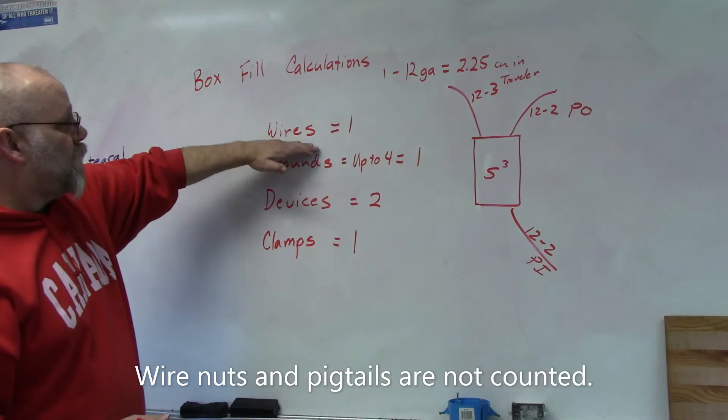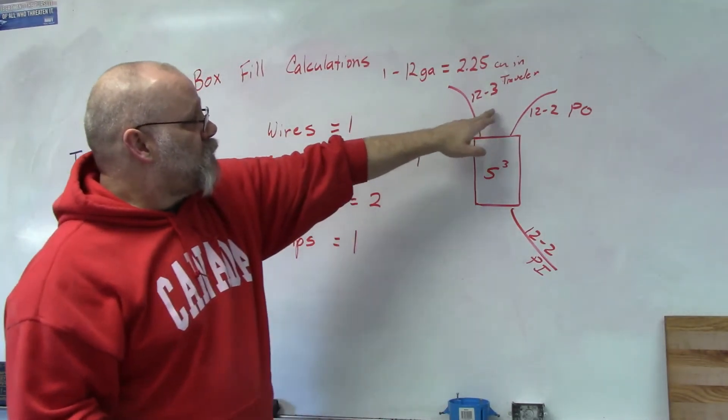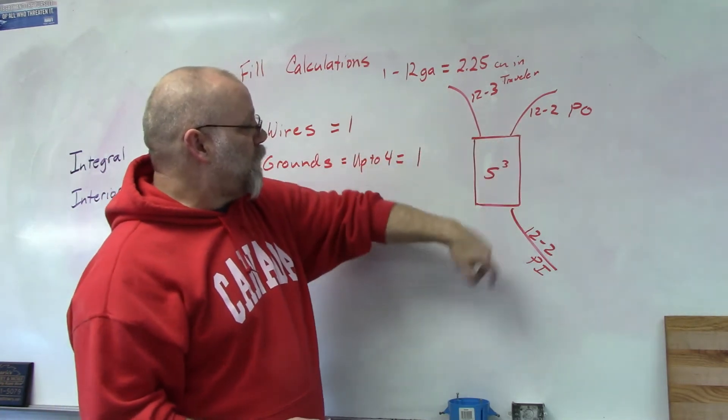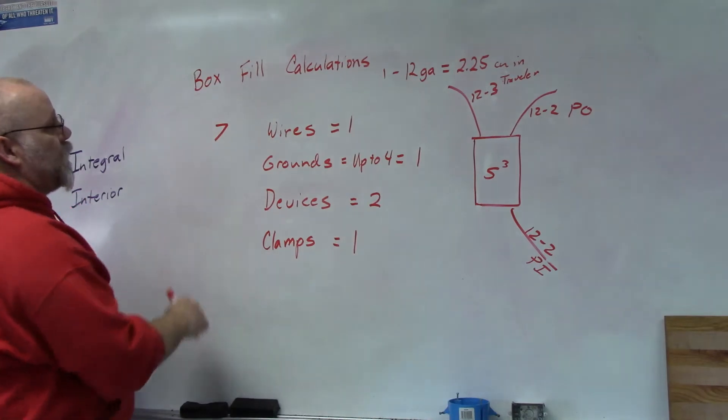So let's look at wires. How many wires do we have? All you have to do is count these wires right here. You got three, four, five, six, seven. So we mark that as seven wires.